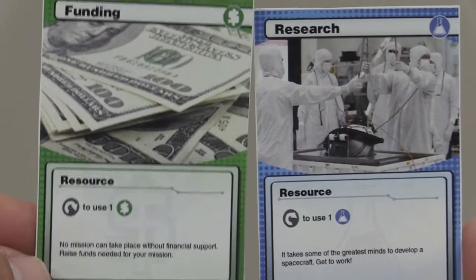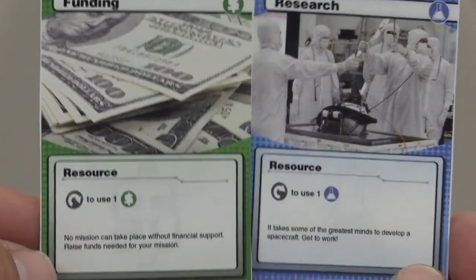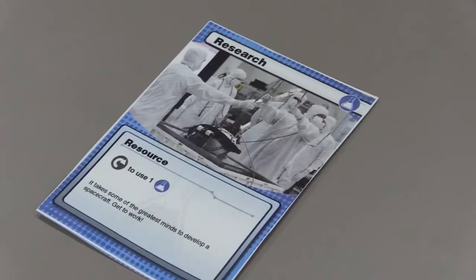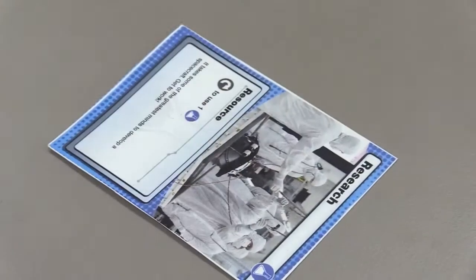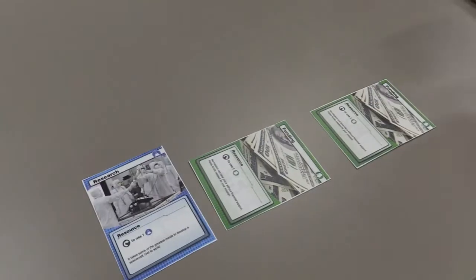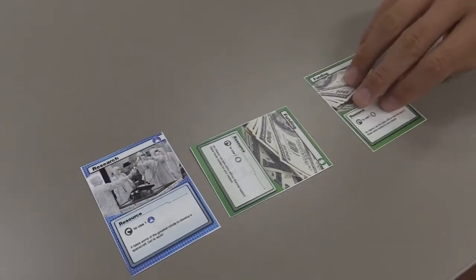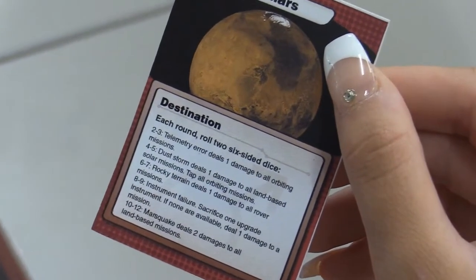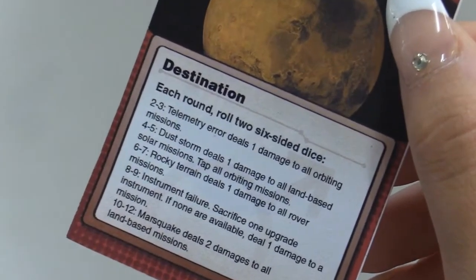Only one resource card can be played from your hand each turn. When a player uses a resource card, it is tapped or turned horizontally to indicate it has been used in that turn. At the start of the player's next turn, all tapped cards become untapped or ready to use again, unless the environmental conditions from the destination card prevent it.